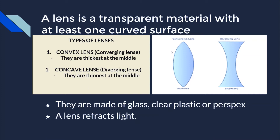The convex lens is thickest at the middle. The second type is the concave lens, or a diverging lens. A diverging lens is thinnest at the middle. Lenses are made of glass, clear plastic, or perspex. A lens refracts light — unlike a mirror, which reflects light. A lens allows light to pass through it, and the light bends at the interface.